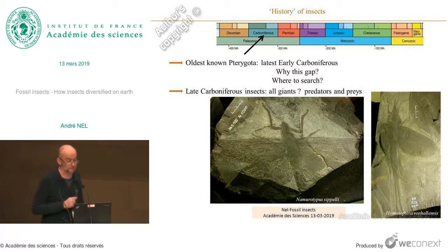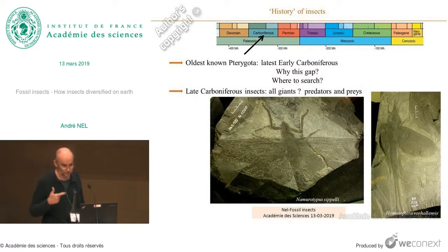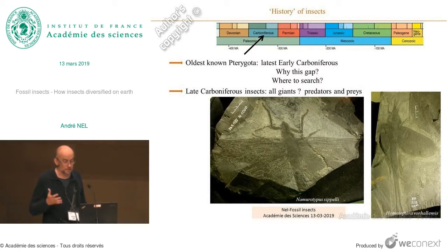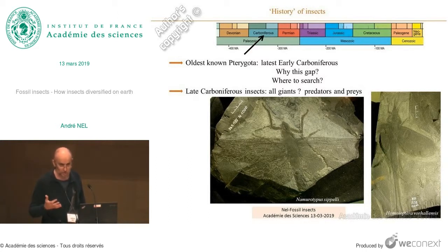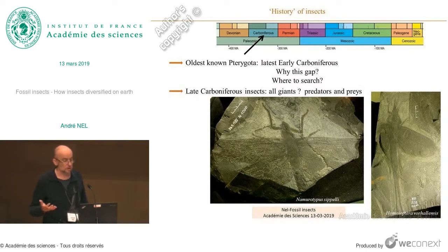We have an exact gap in the early Carboniferous. First, there may be a lack of research in the field — not enough people searching those outcrops. But even when we go to early Carboniferous outcrops, we don't find insects. Maybe these insects were living in the soil and ground, and soil-dwelling animals fossilize very rarely, as decomposition occurs. The better place for fossilization is paleo-lakes, but insects have to reach the lake, and these paleo-lakes have been very poorly investigated for the late Devonian and early Carboniferous.